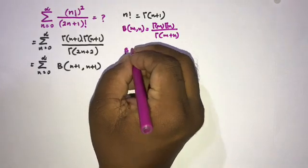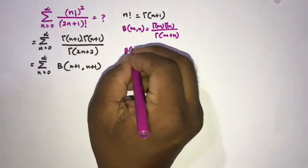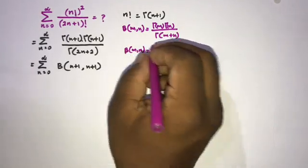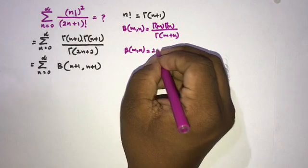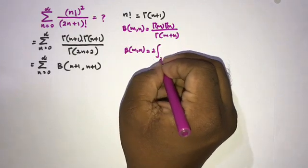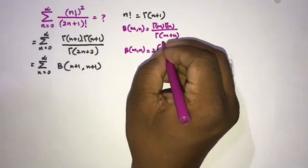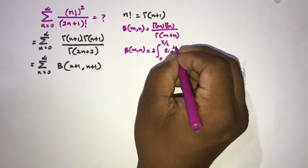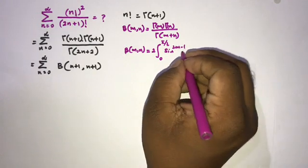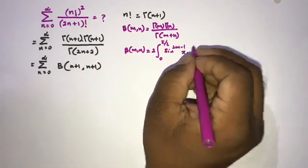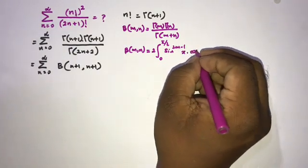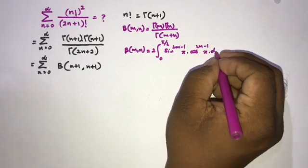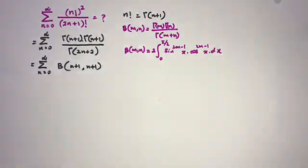We will use this property of the beta function: beta(m, n) equals 2 times the integral from 0 to pi over 2 of sine raised to the power 2m minus 1 of x, times cosine raised to the power 2n minus 1 of x, dx.